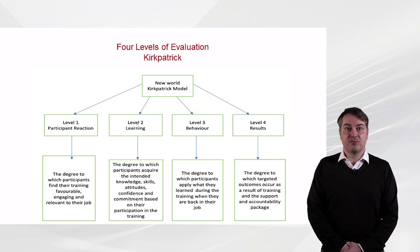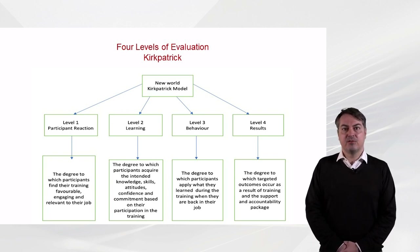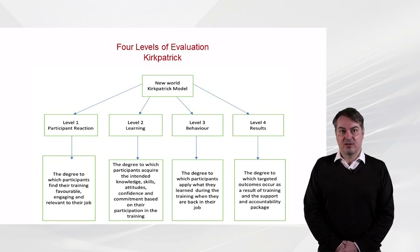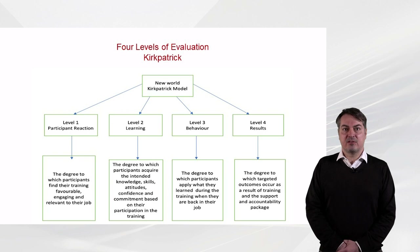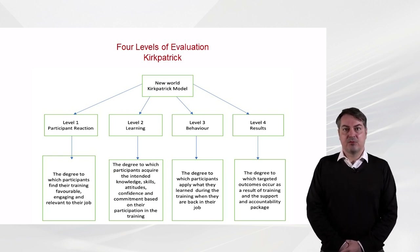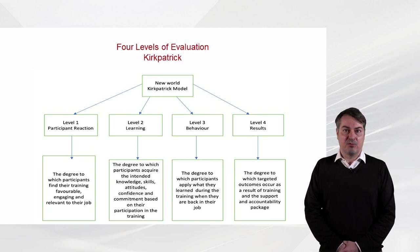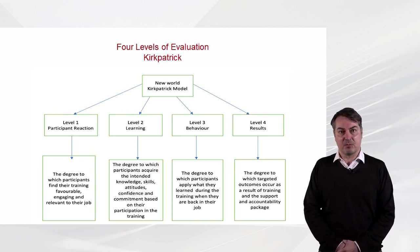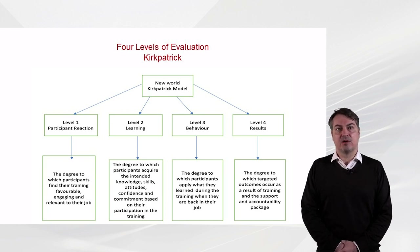The third level of the model is behaviour — that means the degree to which participants apply what they learnt during training when they are back on the job. The fourth level is results — that is the degree to which targeted outcomes occur as a result of training and the support and accountability package. Basically, level 3 is the impact on the people that went through the training, whereas level 4 is about the impact that those people have on their wider environment.